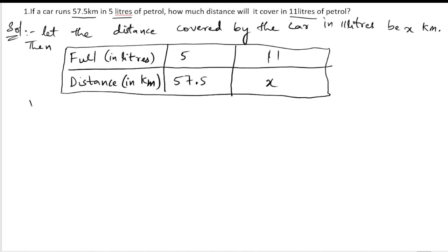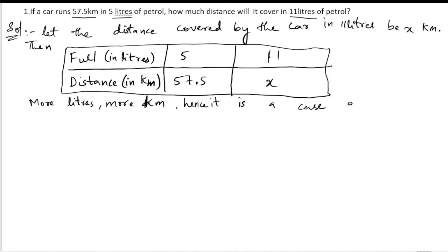Now we know that if there are more liters of petrol, the car is going to travel more distance — more kilometers. So if one quantity is increasing and the other is also increasing, we call it a direct variation. Hence, it is a case of direct variation.